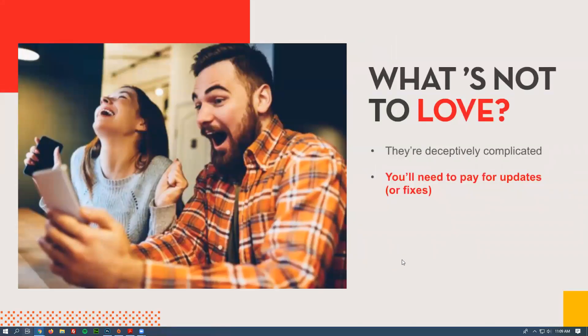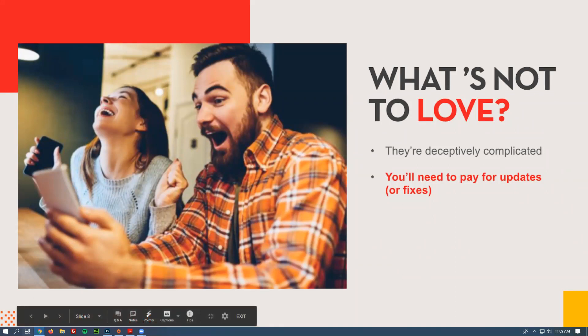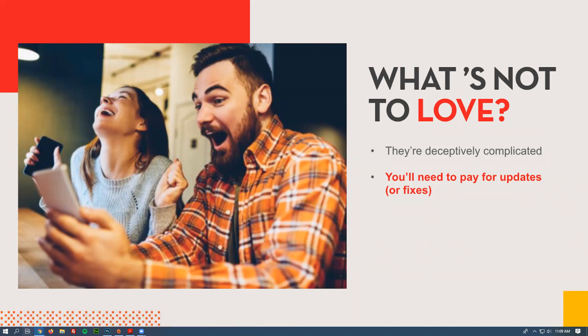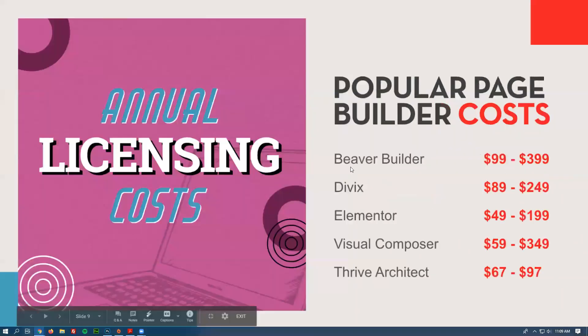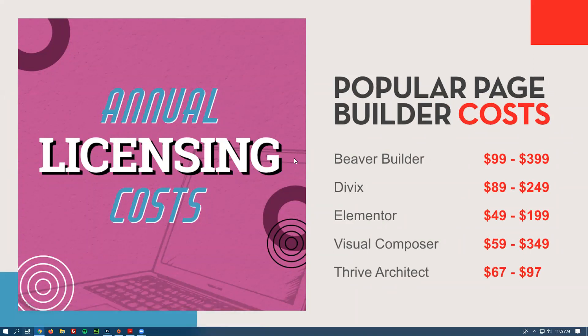The next biggest problem: you'll need to pay for updates — meaning licensing — or you're going to have to pay somebody to fix it when it breaks. These are some of the most popular page builders and their annual licensing fees. On the low end, Elementor is $49 a year, which is pretty nominal. The problem is you don't realize you have to pay this, and it's not something you're usually warned about by the company that builds your website. If you don't get the license to update it, there could be other issues further down the line.